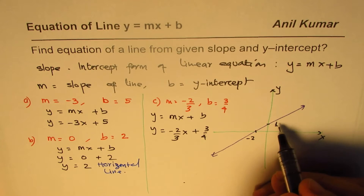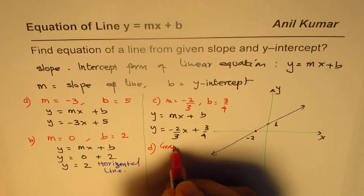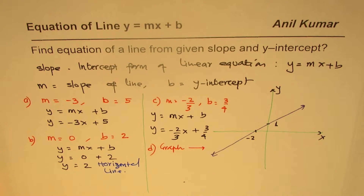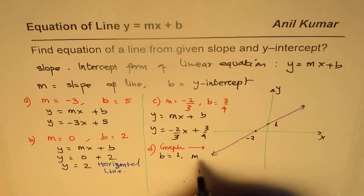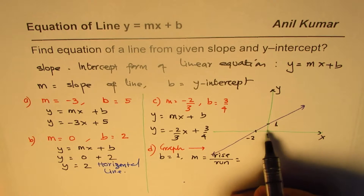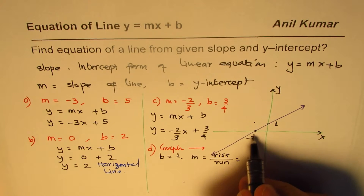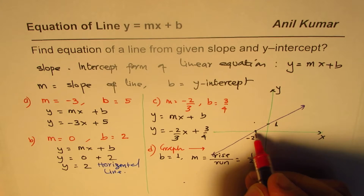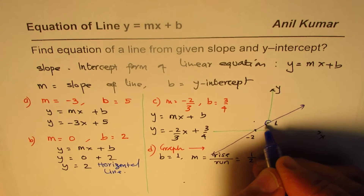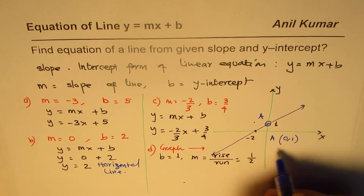Now if a graph is given, how do you find the equation of the line? From the graph on the right, we can see that the y-intercept b = 1. To find the slope, recall that m = rise over run. Moving from the y-intercept, the rise is 1 and the run is 2 units to the right.